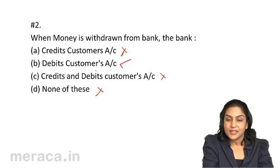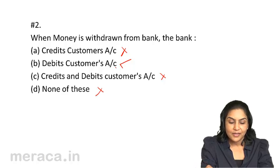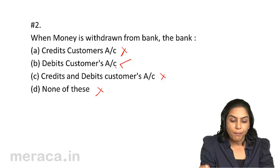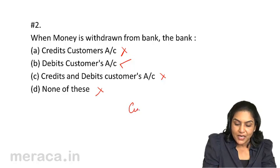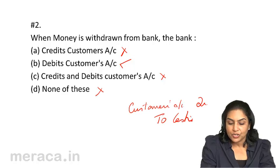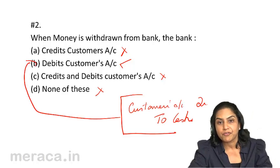We can understand this debit through a journal entry. As far as the bank is concerned, the customer's account represents the bank's liability. The moment money is withdrawn, the bank's liability comes down, so the liability account — the customer's account — is debited. The bank pays cash to the customer, so its cash comes down. Customer's account debit to cash is the logic behind debiting the customer's account when money is withdrawn from the bank.